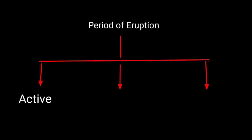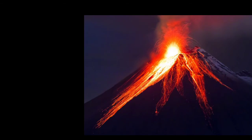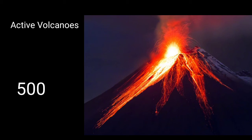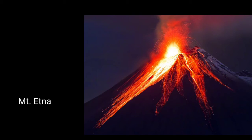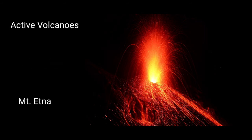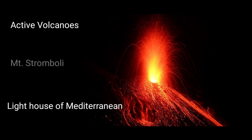Now let us see the classification of volcanoes based on period of eruption. On this basis, there are three types: active volcanoes, dormant volcanoes, and extinct volcanoes. In case of active volcanoes, lava, gases, and fragmented materials are constantly ejected. It is estimated that more than 500 active volcanoes exist throughout the world. Examples include Mount Etna and Mount Stromboli near the Mediterranean Sea.